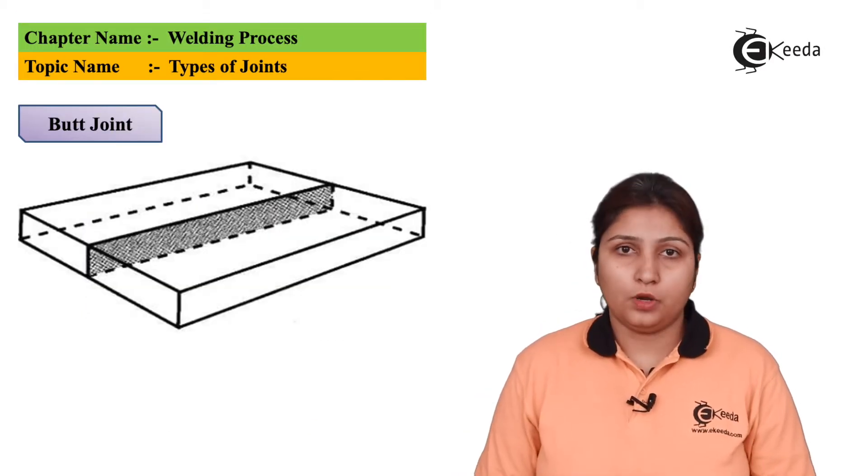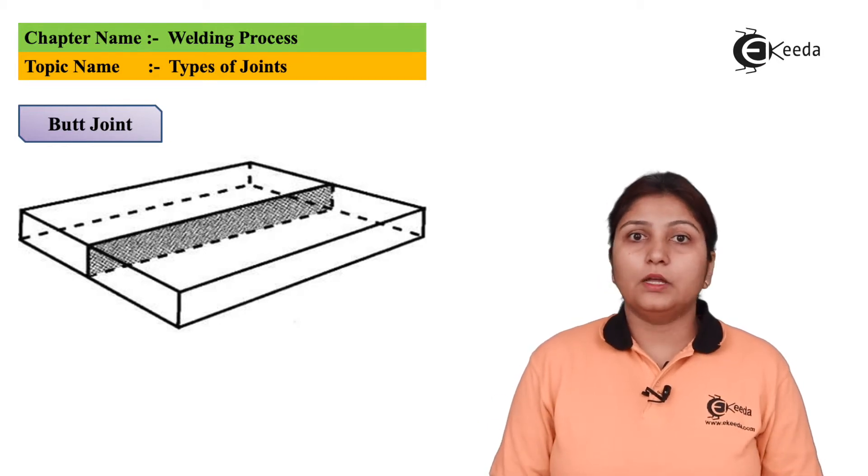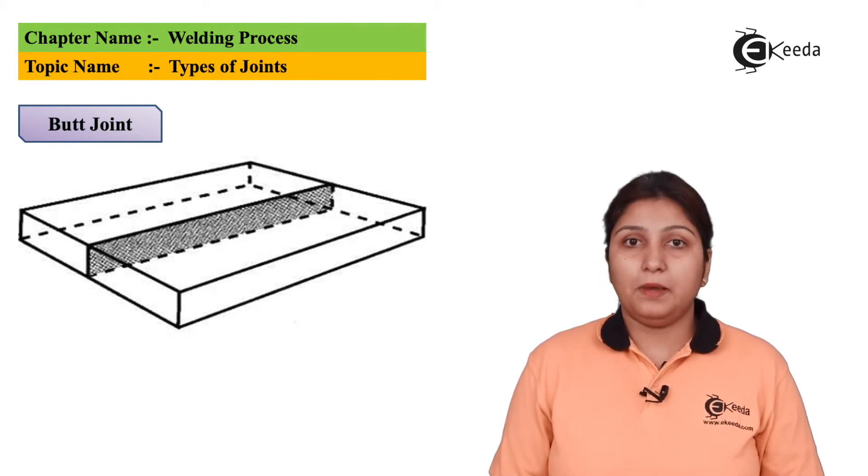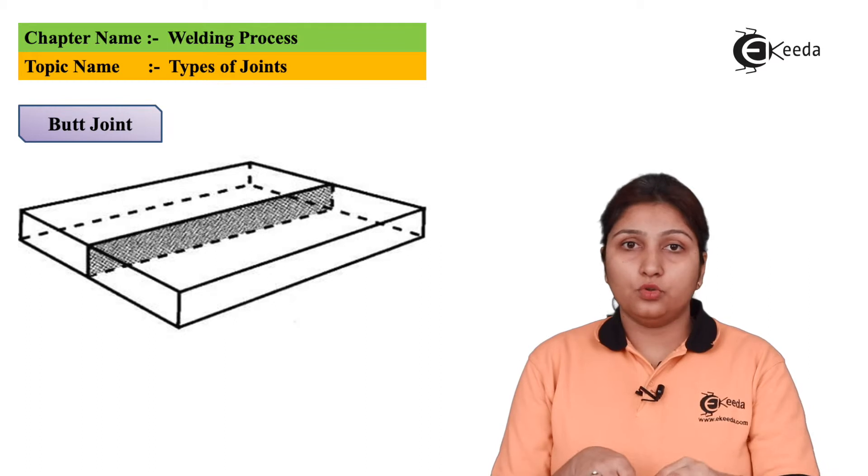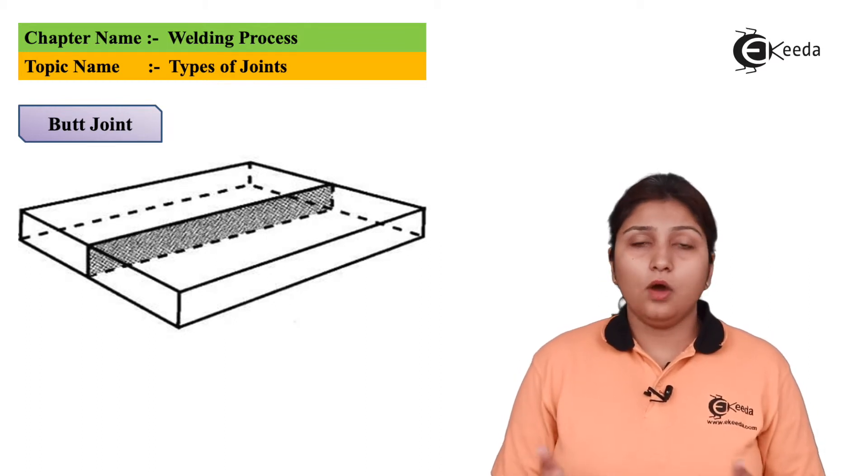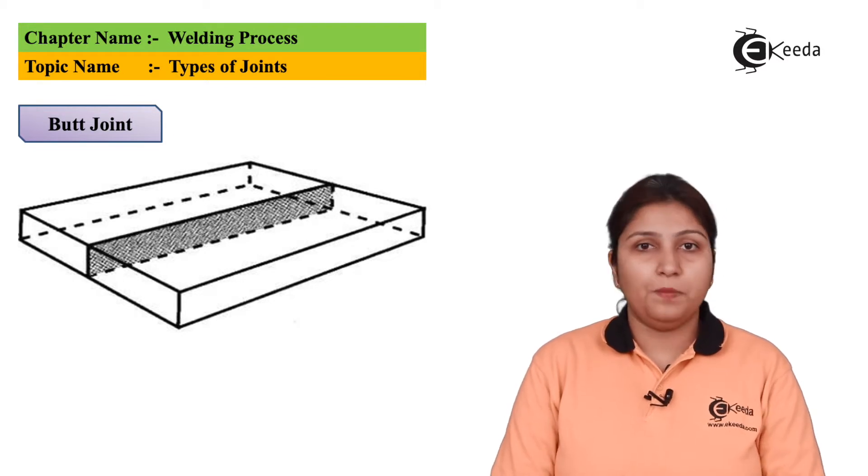Firstly I'll say what is a butt joint. The diagram suggests two parts or two planes are joined in a single plane. Butt joint has a speciality that it can be joined in a single plane. Welding is done between the two joints either by using gas, arc, or any other type of joint but the welding is done using two planes.